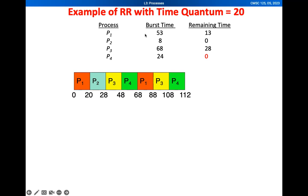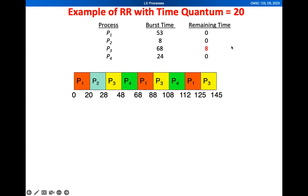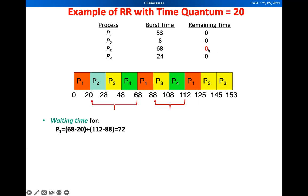We go back to P1. P1 will be given 20 milliseconds, but since it has a remaining time of only 13 milliseconds, it gets to complete at the 125th time period. We are left with P3 with 28 remaining time. P3 is first given 20, then since there are no more other processes, P3 gets to execute again and all processes have completed at the 153rd time period.